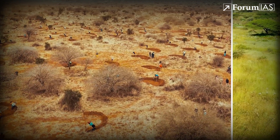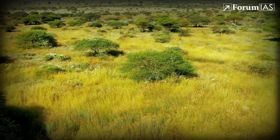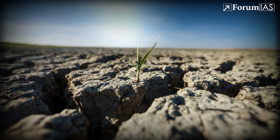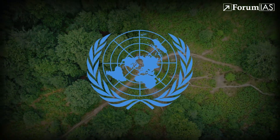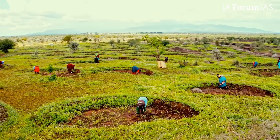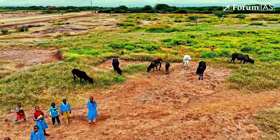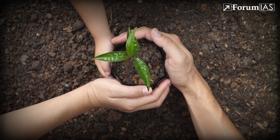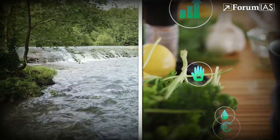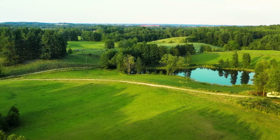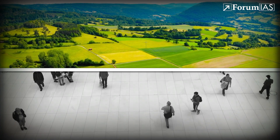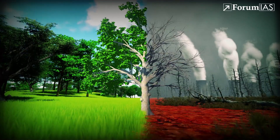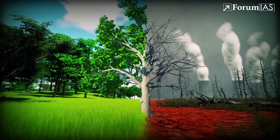Together, these efforts show that land can be restored when nature and people work together. The world needs to restore 1.5 billion hectares of land by 2030 to reverse degradation and meet climate goals. This aligns with the UN Decade on Ecosystem Restoration (2021–2030), which is now at its halfway point. If we act now, we can build a trillion-dollar land restoration economy — one that creates jobs, protects nature, and ensures water and food security for future generations. The 2025 theme, 'Restore the Land, Unlock the Opportunities,' reminds us that healthy land is the foundation of a healthy society. Desertification and drought may not make daily headlines, but they are among the most urgent environmental challenges of our time.